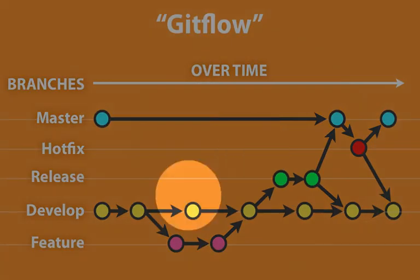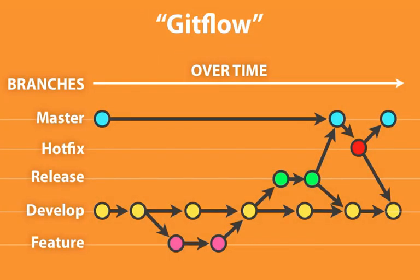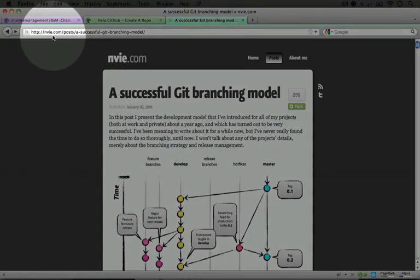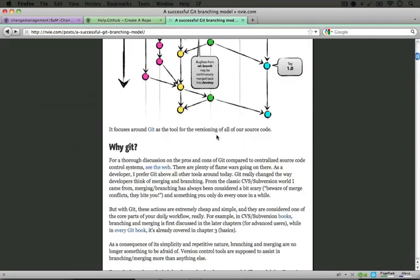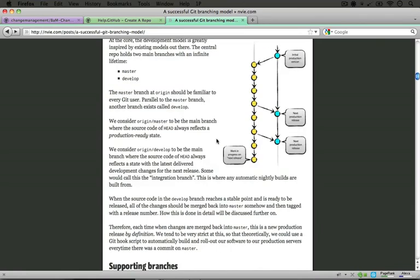Now this whole branching model — where there's master, develop, feature branches, release branches, and hotfix branches — is called Git Flow. A lot of the concepts in this model aren't really new, but they were brought together in this unique way to work with Git by a fellow named Vincent Dreessen. You can learn more about the model by going to nvie.com/posts/a-successful-git-branching-model. He's got some great diagrams there and he explains the purpose of each type of branch and what rules are associated with those branches.